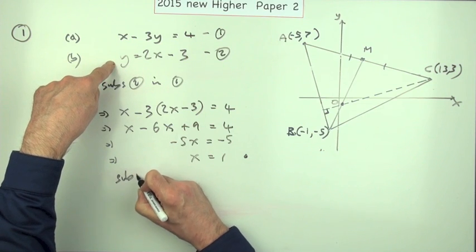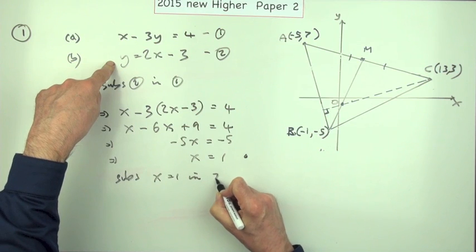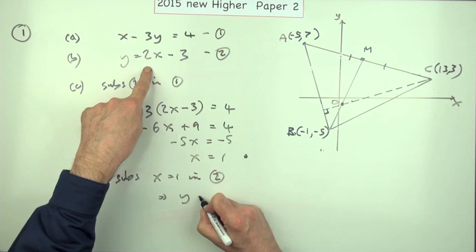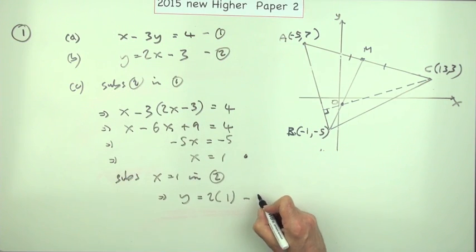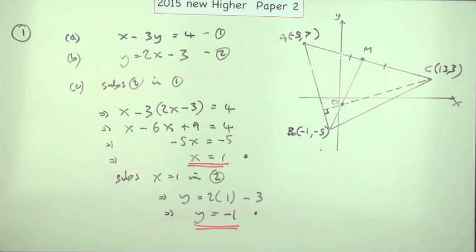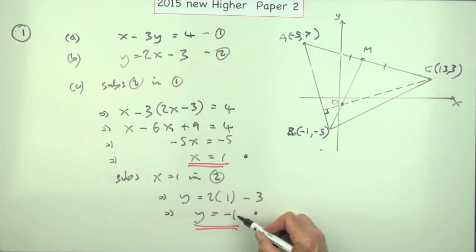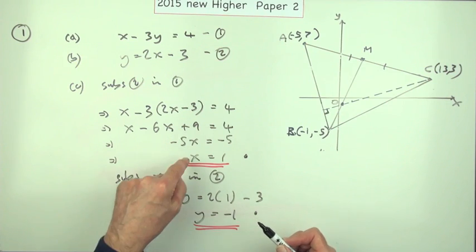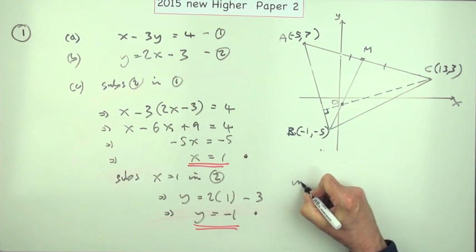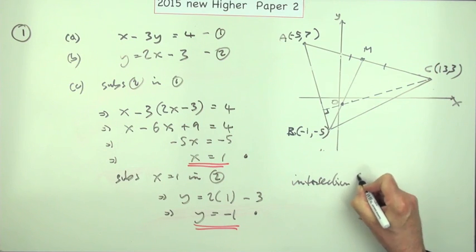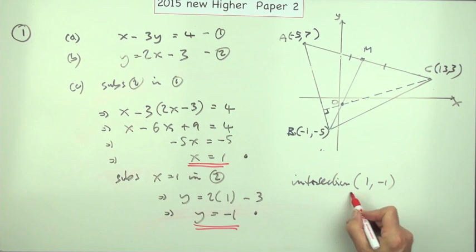And it will read y equals 2 times 1 minus 3, which means y equals -1. There's the other mark. Now of course that's the way it's written down in the marking scheme because it does after all say in the question 'find the coordinates', and those are strictly speaking the coordinates - that's the x coordinate, that's the y coordinate. But I always like to finish off by saying: so the intersection is the point (1, -1). So that wasn't a bad question to start off with if you were careful.